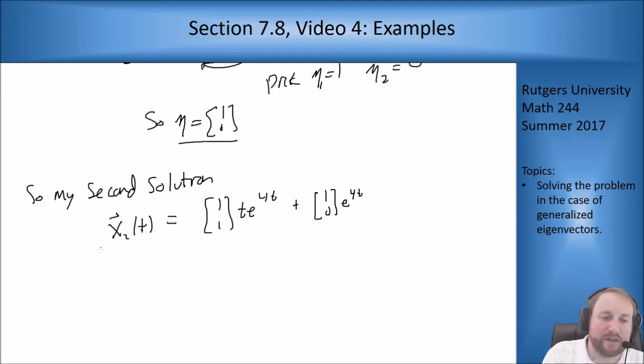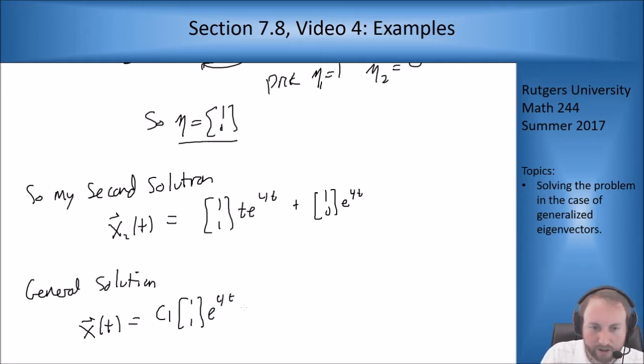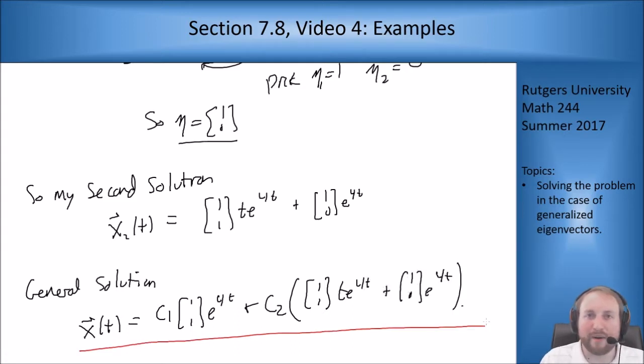Putting those two together, my general solution is x(t) = c₁[1,1]e^(4t) - that was my first term from the eigenvector - plus c₂([1,1]te^(4t) + [1,0]e^(4t)).